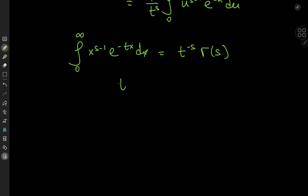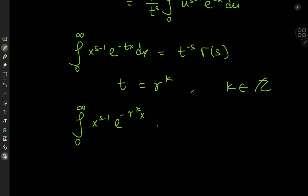So the integral from 0 to infinity of x to the s minus 1 times e to the negative tx dx equals t to the negative s times gamma of s. Now for any positive real number t, we can find another positive real number r such that t equals r to the k, where k is an integer. That means we have the integral from 0 to infinity of x to the s minus 1 times e to the negative r to the k times x dx equal to r to the negative sk times gamma of s.